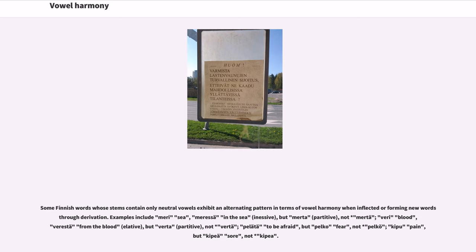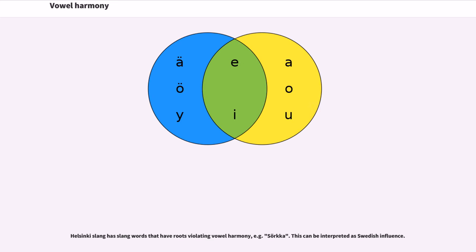Some Finnish words whose stems contain only neutral vowels exhibit an alternating pattern in terms of vowel harmony when inflected or forming new words through derivation. Examples include meri (sea) — meressä (in the sea) but merestä, not merestä; veri (blood) — verestä (from the blood) but verta, not vertä; pelätä (to be afraid) but pelko (fear), not pelkö; kipu (pain) but kipeä (sore), not kipeä. Helsinki slang has slang words with roots violating vowel harmony, for example sörkkä, which can be interpreted as Swedish influence.